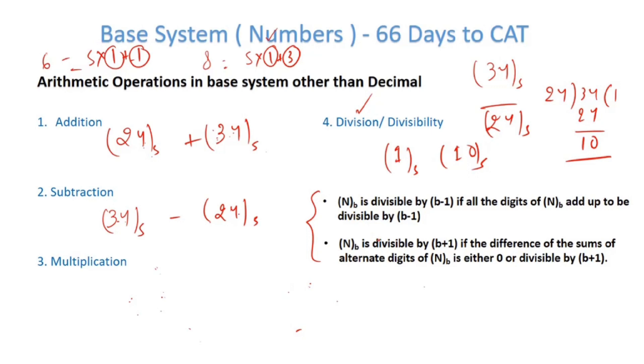Two important divisibility concepts that we should remember. One is if I have a number with base B, it is divisible by B minus 1 if all the digits add up to be divisible by B minus 1. Let me take an example. So 44 with base 5. If you add the numbers here, 4 plus 4, 8. So then this number must be divisible by this base minus 1, that is 4.